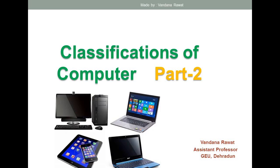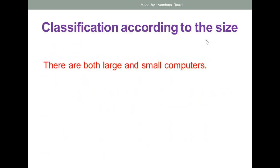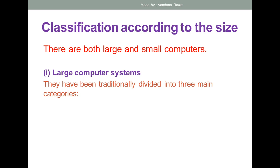Good morning everyone. This is the next part of classification of computers. In the first part we discussed how to classify computer systems according to logic, but in the second part we are taking the next category: how to divide computers according to size. Basically we have both large and small computers. Under large computer systems we can divide into three categories: supercomputer, mainframe computer, and mini computer.